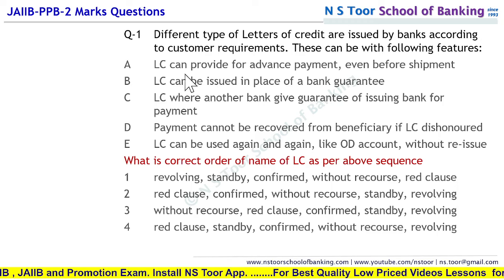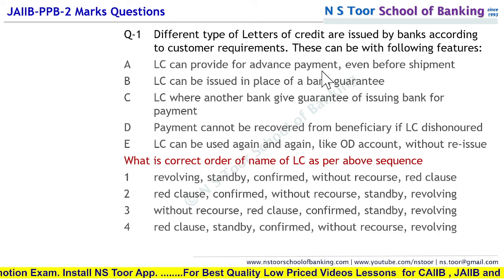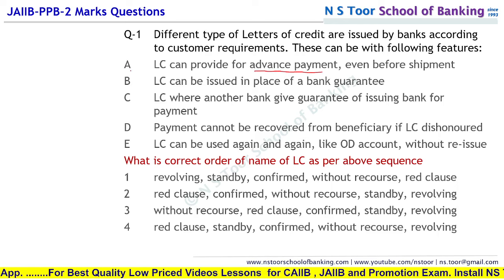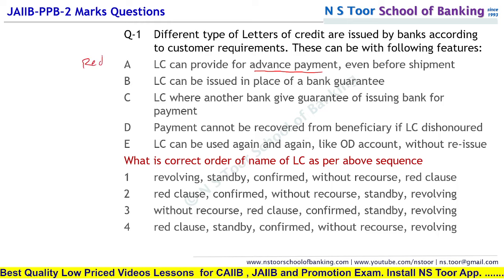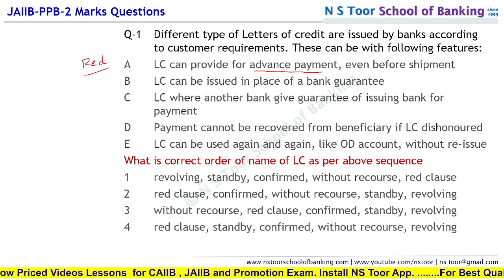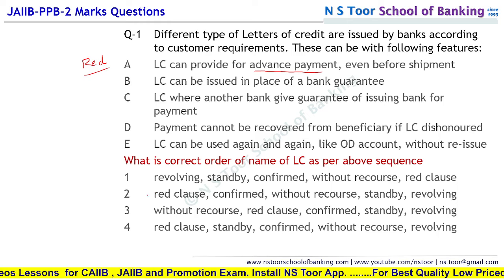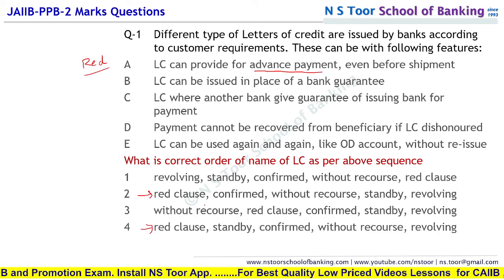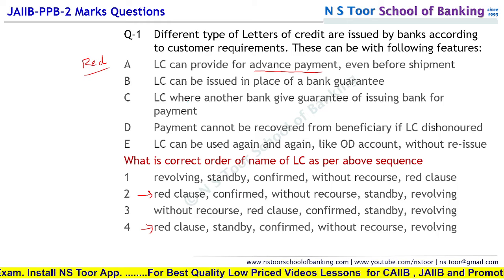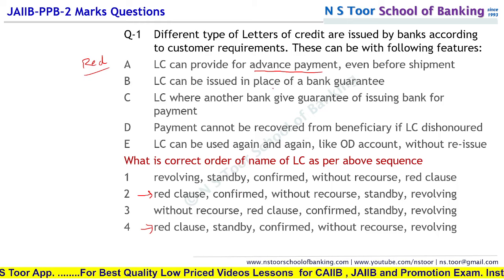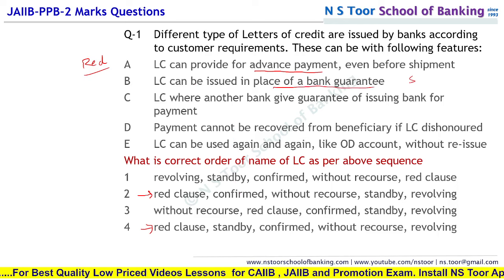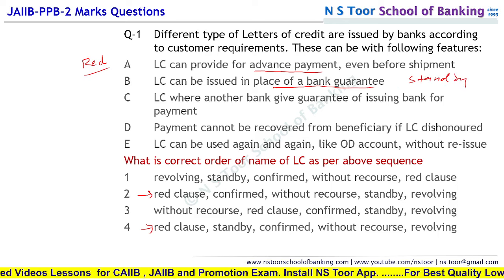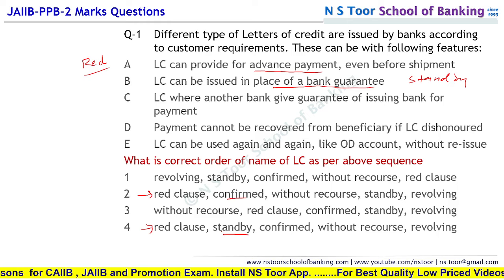A ko dekhte hain pehle: LC can provide for advance payment — advance payment wala LC kya hota hai? To one thing is certain about that. Ab hum second LC ko pakdte hain: LC can be issued in place of bank guarantee — isko hum kehte hain Standby LC. To standby LC ki clause ko dekh lein — ya hum pe confirmed hai ya standby hai, so it means this should be the answer.